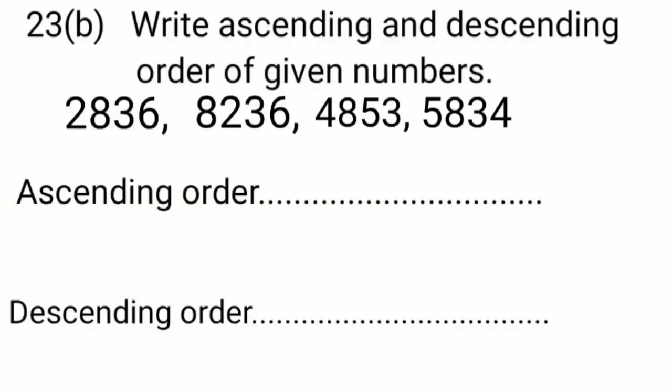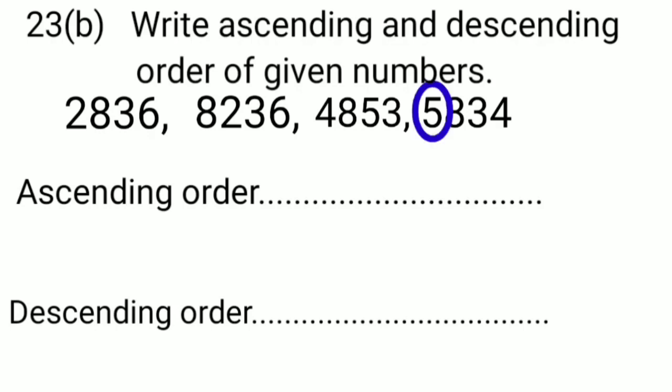Question 23, part B: write the given numbers in ascending and descending order. First, we look at the number of digits — all numbers have 4 digits. Then we look at the digit at the thousands place. In the first number it is 2, in the second number it is 8, in the third number it is 4, and in the fourth number it is 5. Among all, 2 is the smallest, so we write 2,836 first.